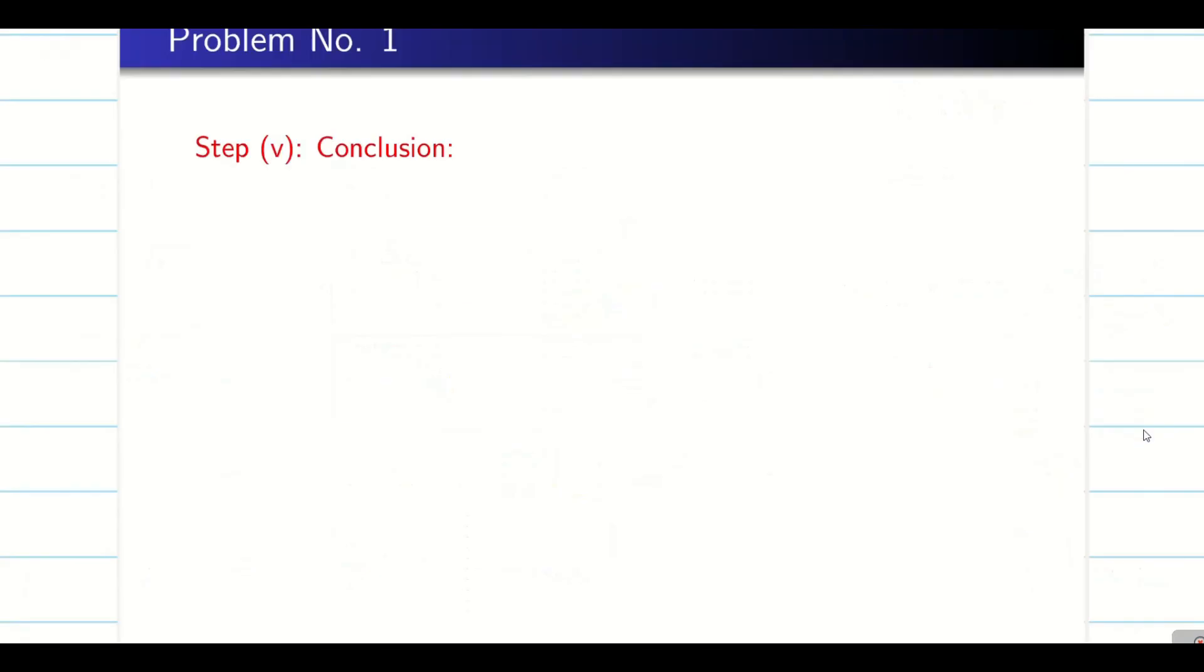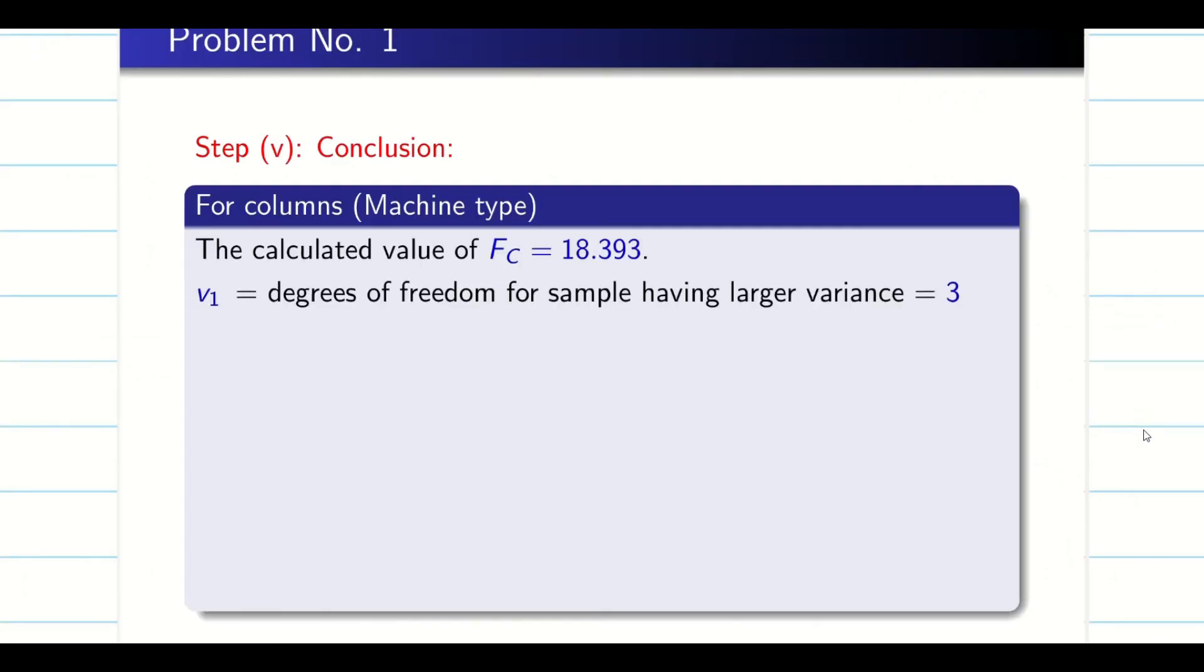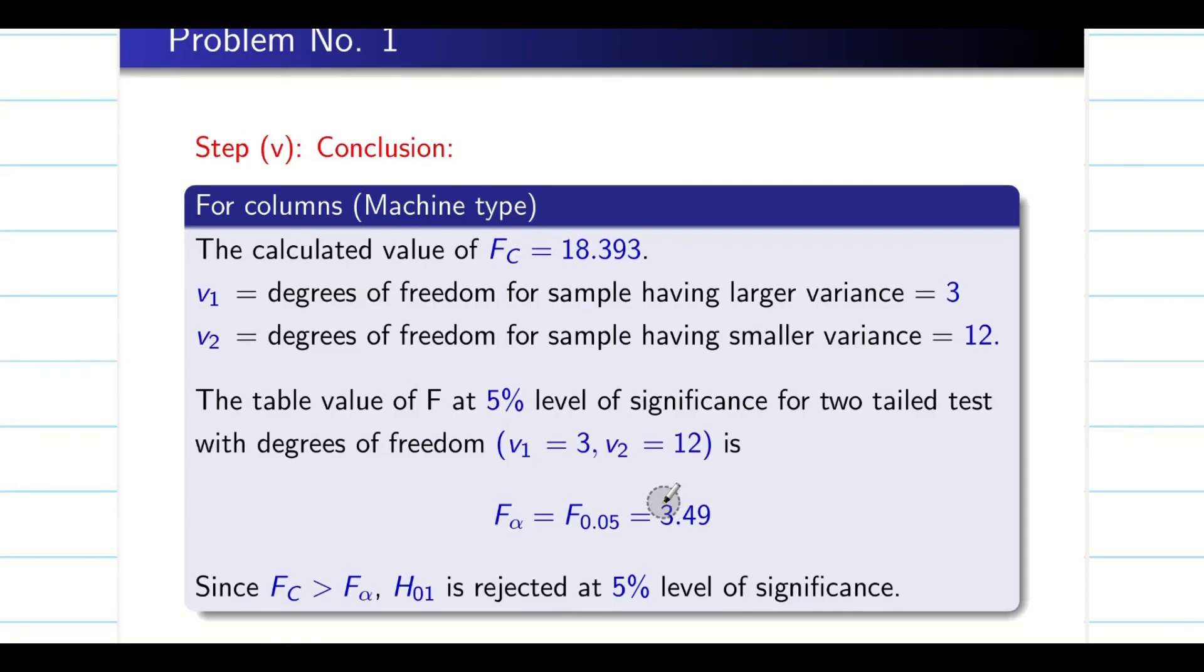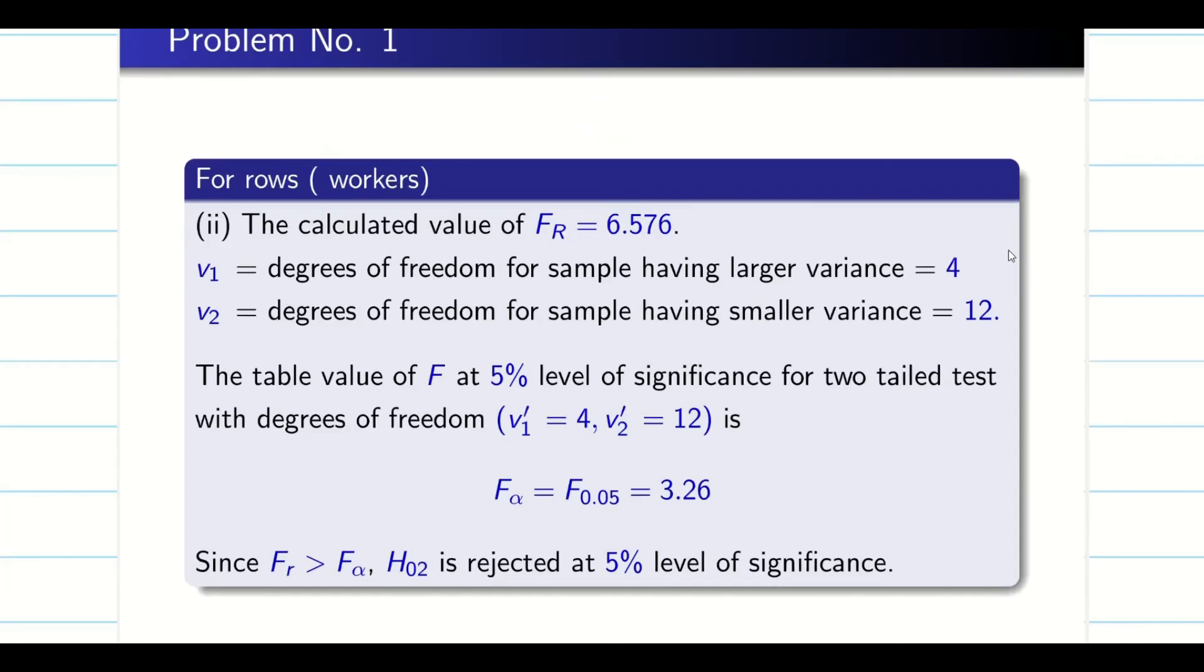Now you see, I have to give the conclusion. First I am going to give the conclusion for columns. FC is 18, degree of freedom as usual we know. And F alpha value is 3.49. So my column value is going to be 18.393, and it is going to be greater than alpha value that is 3.49. So I say it as H01 columns. For row I will say it as H02. So it is rejected. Similarly, when we go for rows, we write the calculated value, degree of freedom, and table value. My F4 is 6.576, that is greater than my F alpha, that is going to be 3.26. So here also I am going to reject, F4 is greater than F alpha. So H02 is rejected. Hope you understand the problem, guys.